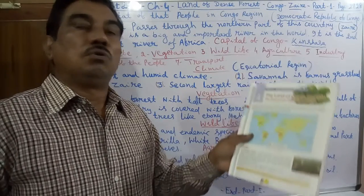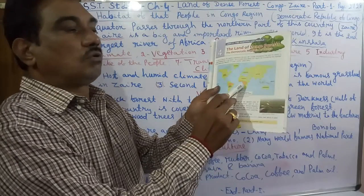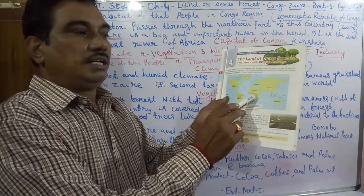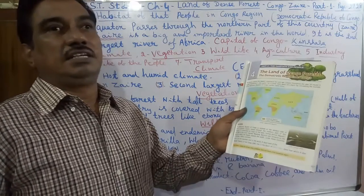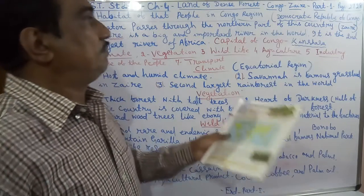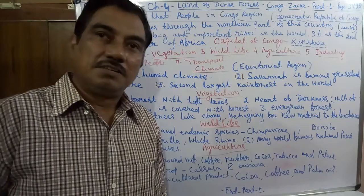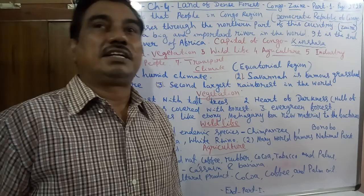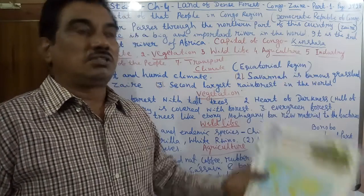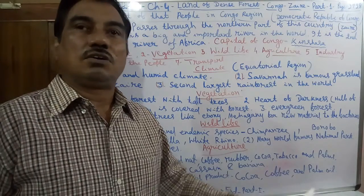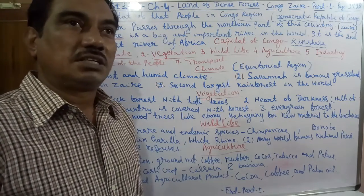This is the Habitat of People of Congo. This lesson is all about the Habitat of People. Congo is the area lying in the Africa continent. It very recently got its freedom in 1990. So, what is the Habitat? How does it impact on the Habitat? Because the equator passes through the northern part of this country.